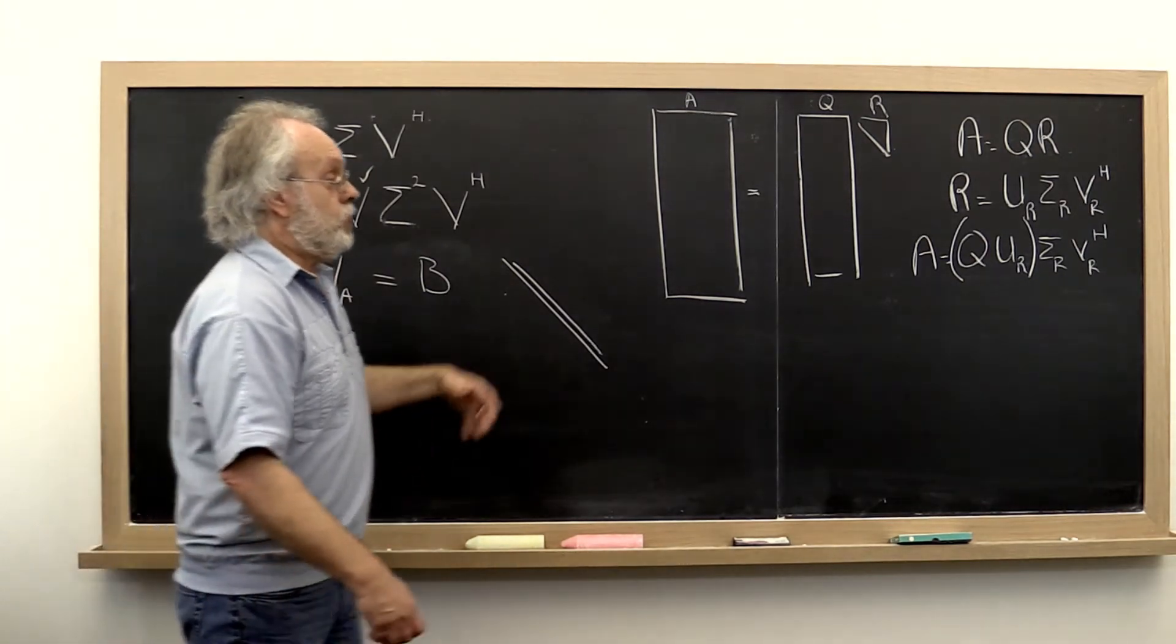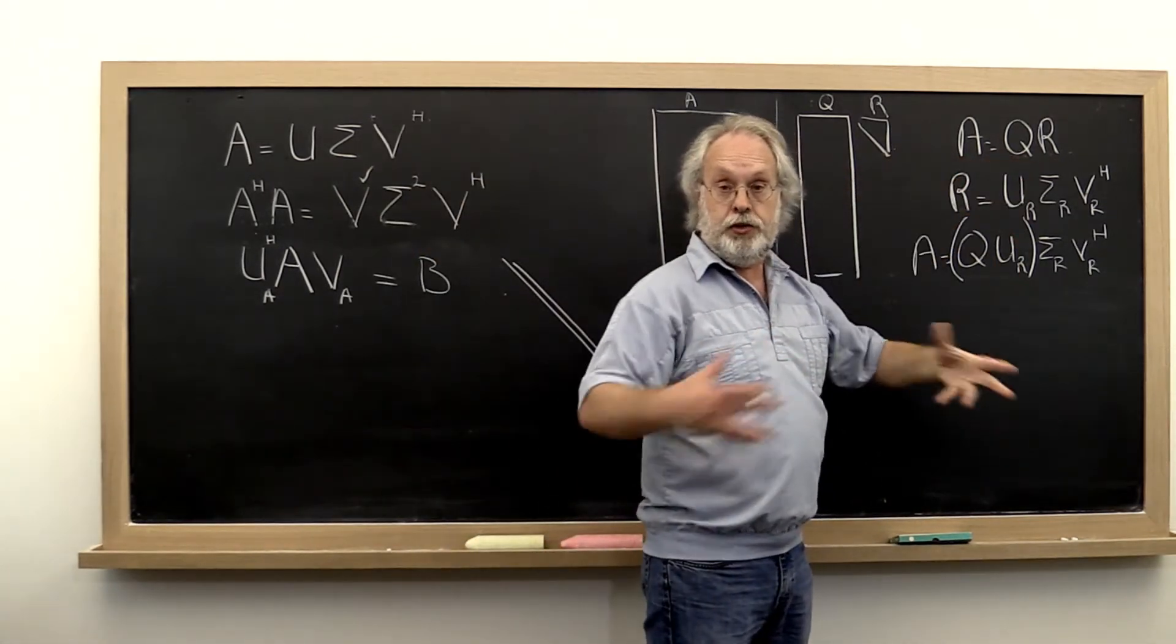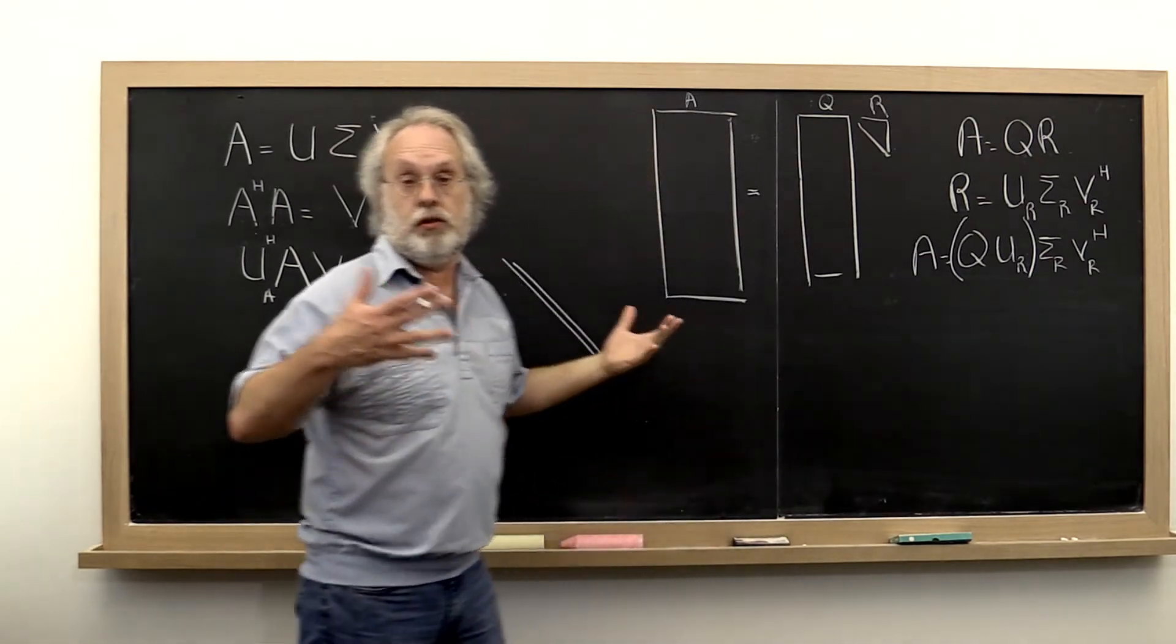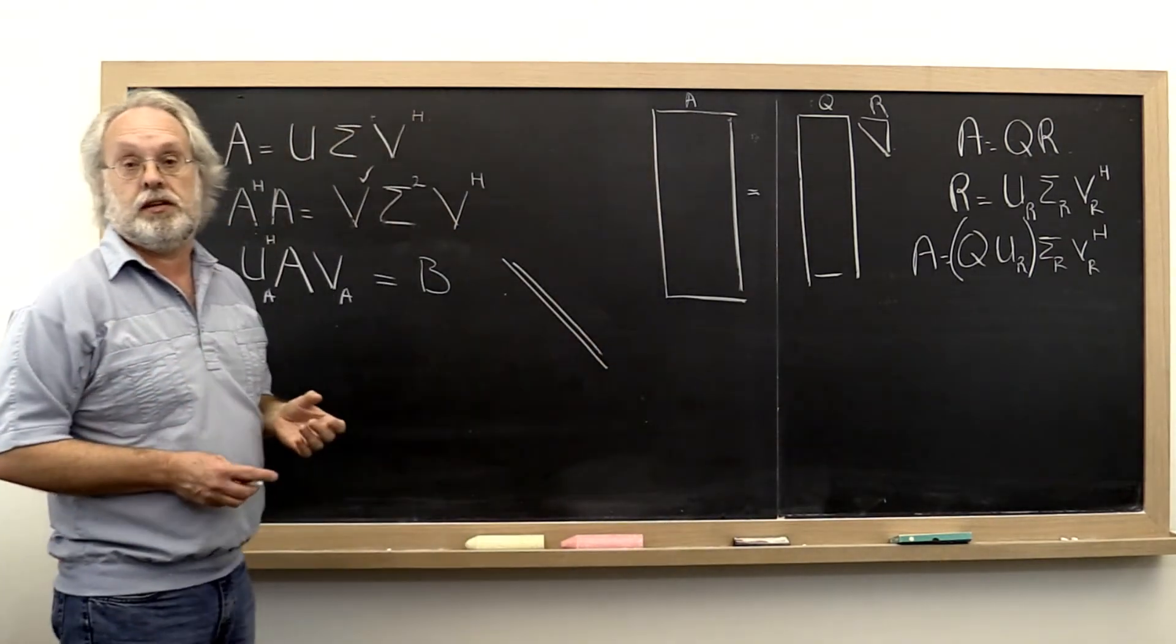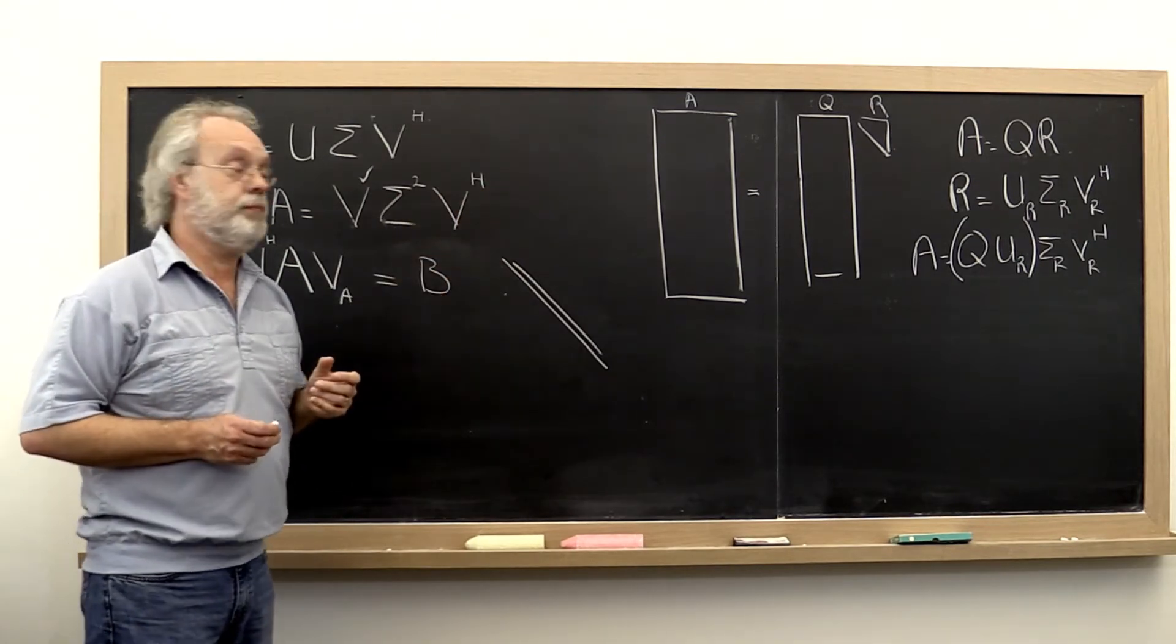And we can then combine that with our matrix Q. And with all of that, if we do it just right, we end up with something like the reduced singular value decomposition of our original matrix A.